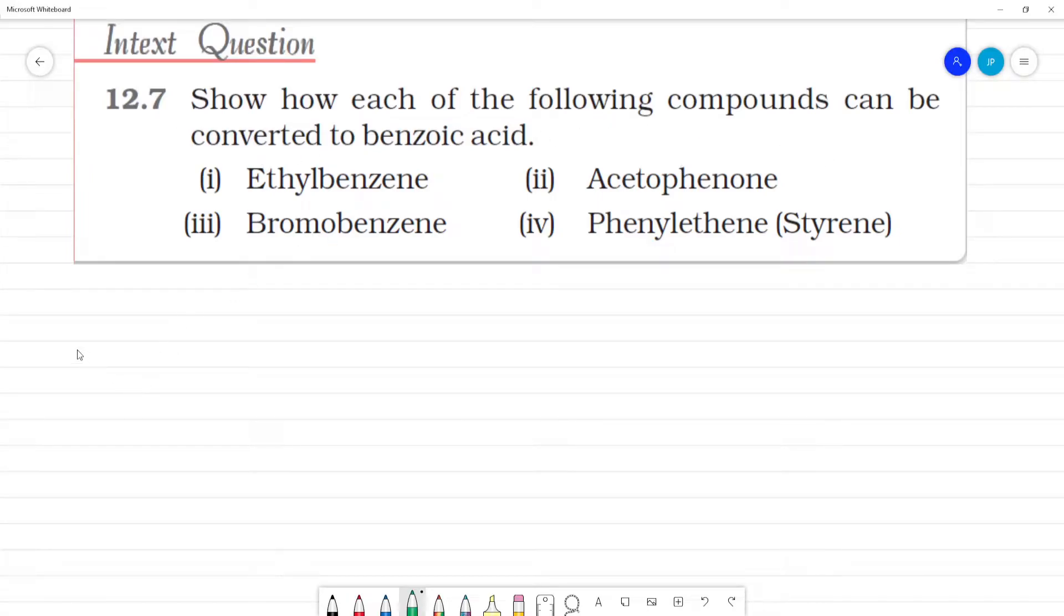How the following compounds can be converted to benzoic acid. Benzoic acid is C6H5COOH. All of them, we say the final product is benzoic acid.